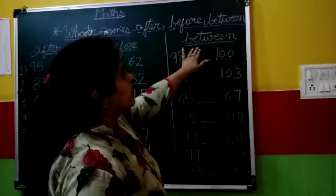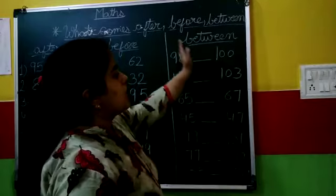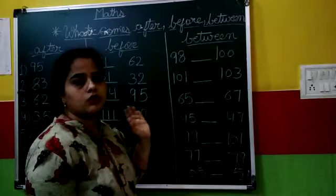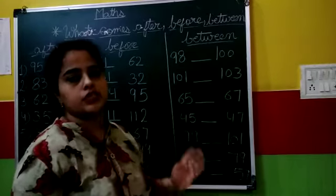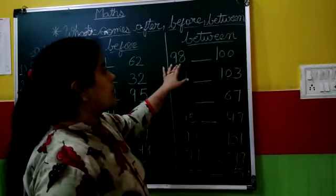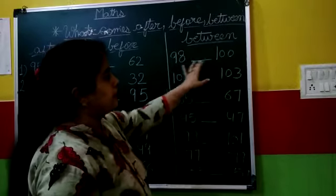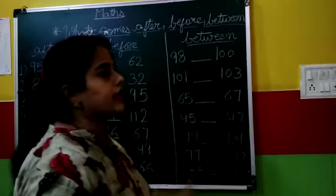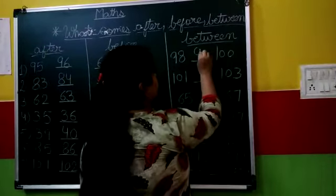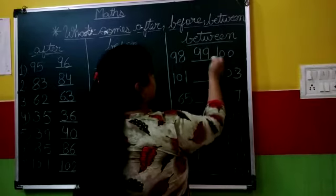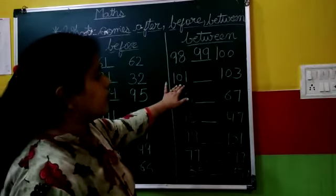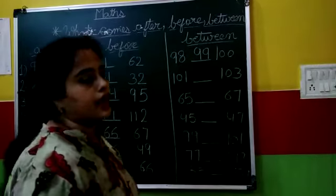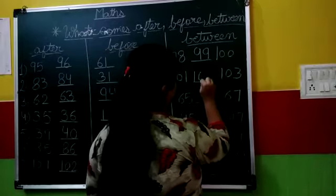Now we start between. Between means what number comes in between? Children, you will be given the first and third number. You have to tell what number comes in between, okay? 98, 100. What number comes between these? 98, 99 and then 100. 101, 103. What number comes in between? 102.